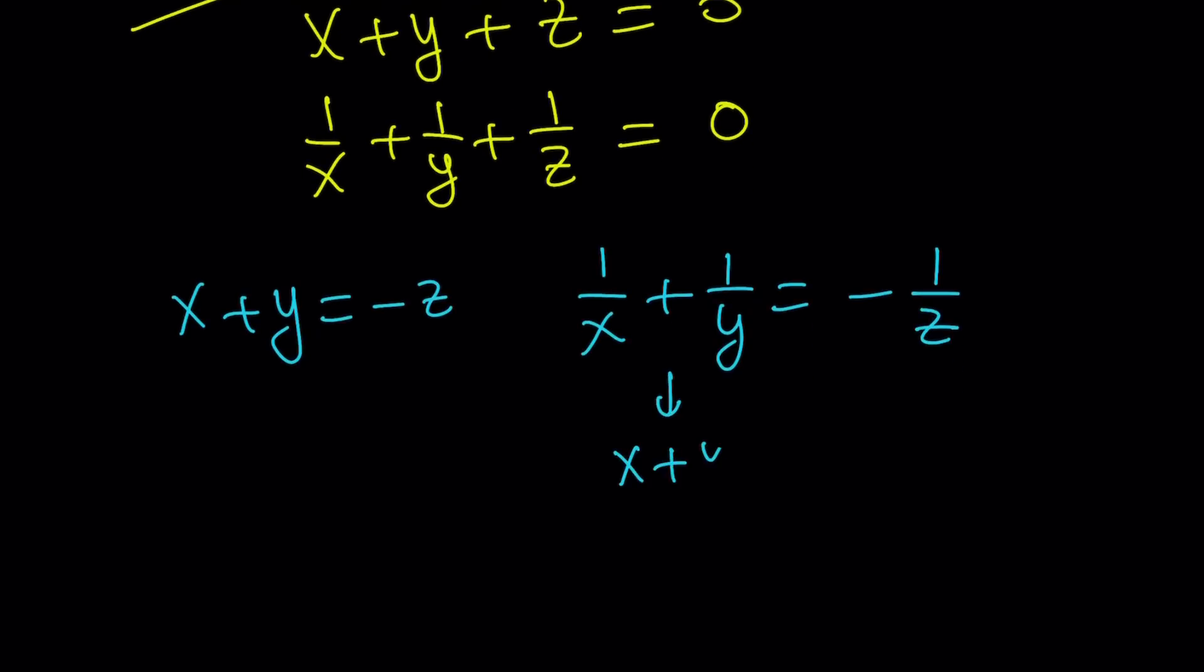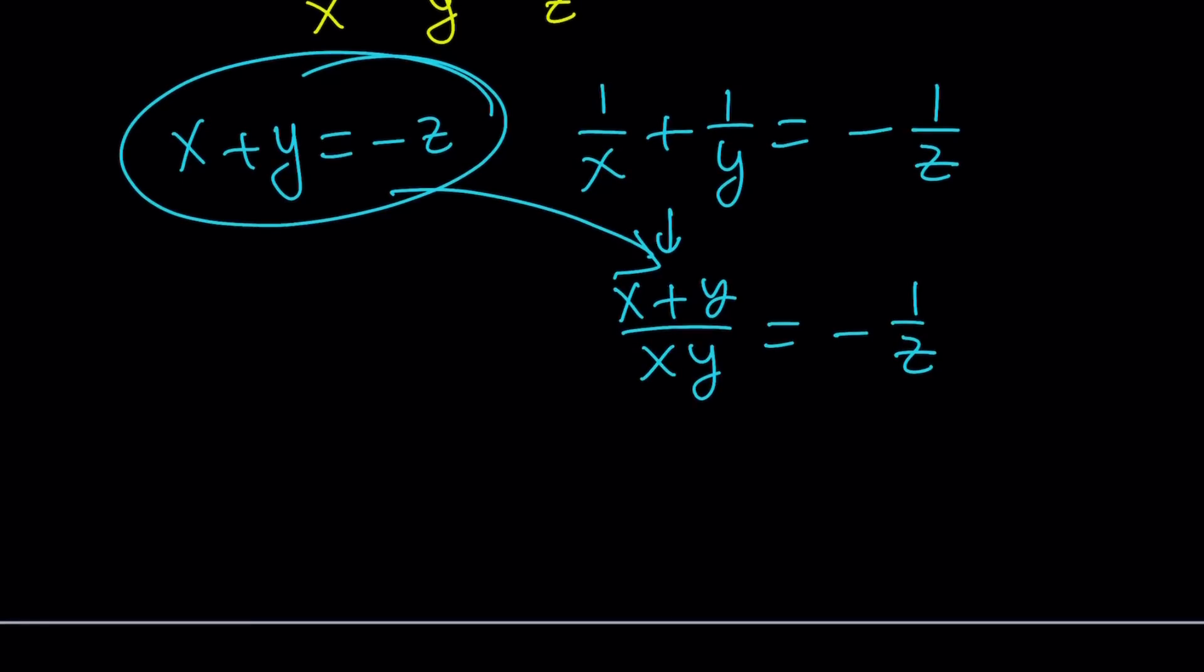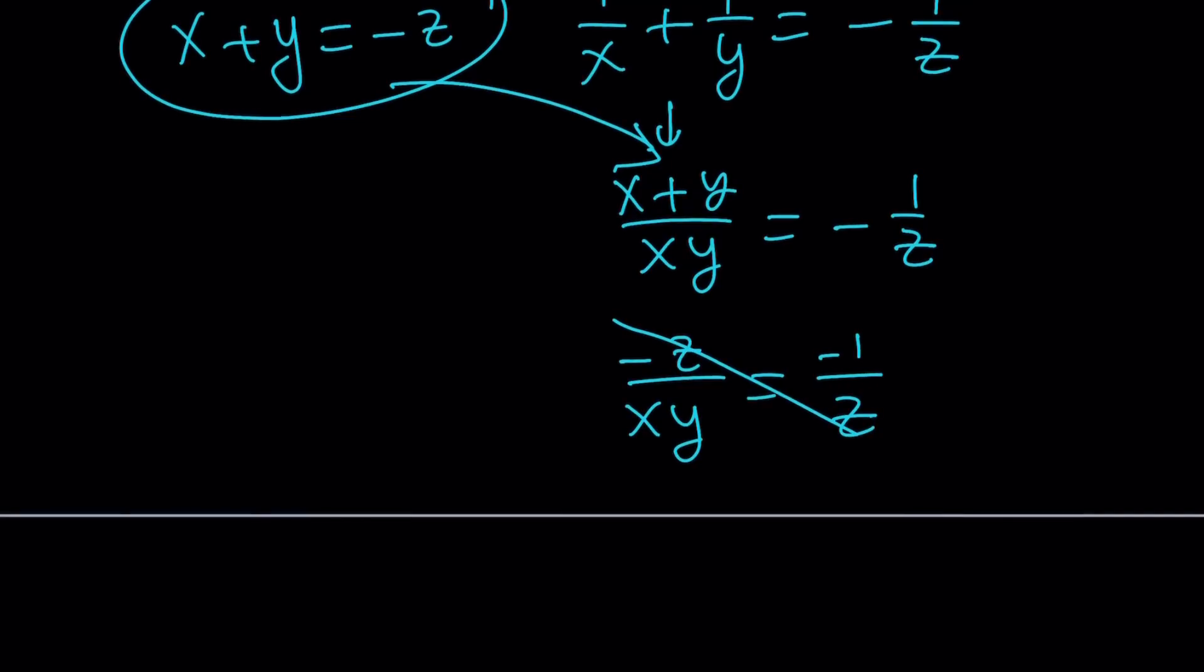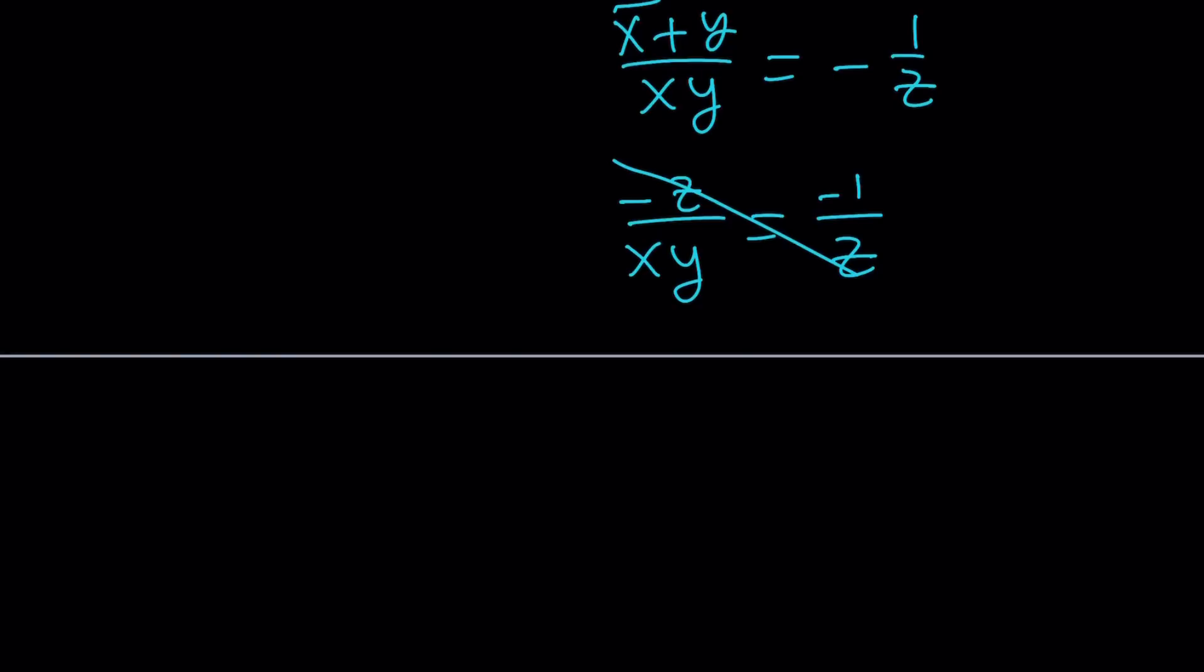X plus Y over XY equals negative one over Z. But I do know that X plus Y is negative Z. So I can substitute—substitution is powerful. You know that, right? So I get negative Z over XY equals negative one over Z. I don't know where to put the negative. Let's put it here. Now, this gives us something interesting. Negative Z squared equals negative XY.